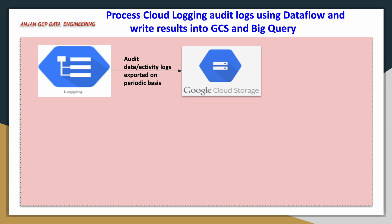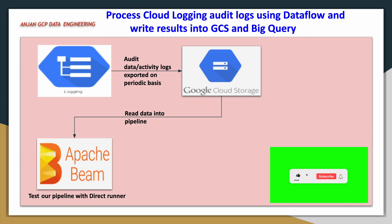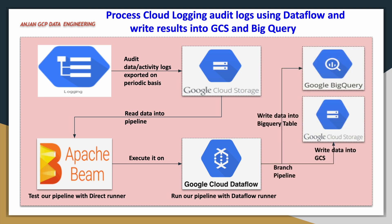We will make use of those logs and process them using an Apache Beam batch pipeline. We will perform unit testing using the direct runner through Cloud Shell environment. Once that is fine, we will run the pipeline on the Google Cloud Dataflow runner. In parallel, we will insert the data into a GCS bucket as well as a BigQuery table. This is a simple pipeline with two branches.